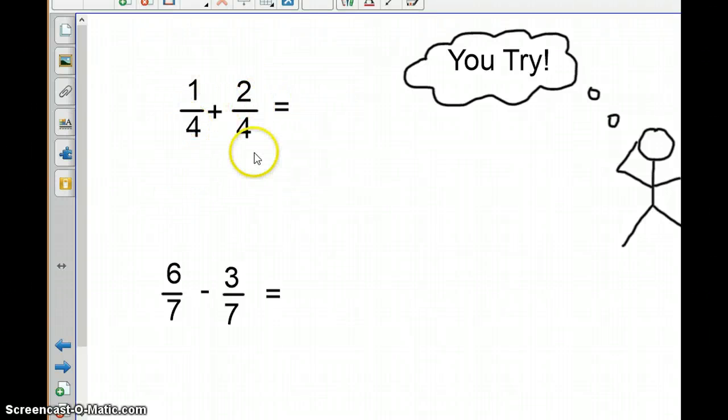We have 1 fourth plus 2 fourths. Oh, this is the same one that we already did. And we know that the answer, the denominator stays the same. So we go ahead and write our denominator, and then we just add the numerators. 1 plus 2 is 3.